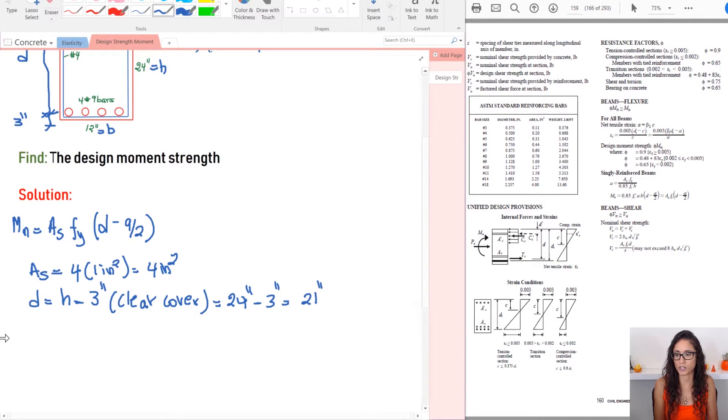The next thing we need to calculate is A. So let's solve that. So A, we are given the equation A is equal to AS times FY divided by 0.85 times F prime C times B. Okay.